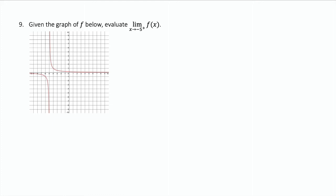Given this graph, we want to evaluate this limit as x approaches negative 5 from the right of f of x. If we go over to negative 5, we see that on the right side of negative 5, our function is going up. And so this limit is going to be positive infinity.